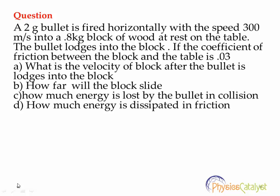Now let us take a small problem based on these steps. A 2-gram bullet is fired with a speed of 300 meters per second into a 0.8 kg block of wood resting on a table. The bullet lodges into the block. The coefficient of friction between the block and table is 0.03. Find: (A) the velocity of the block after the bullet lodges, (B) how far the block slides, (C) how much energy is lost in the collision, and (D) how much energy is dissipated by friction.